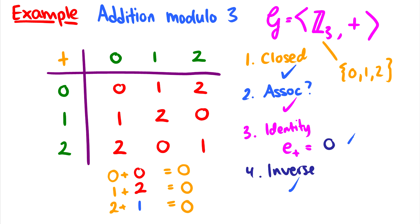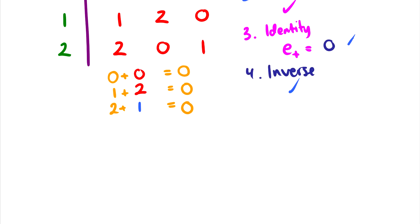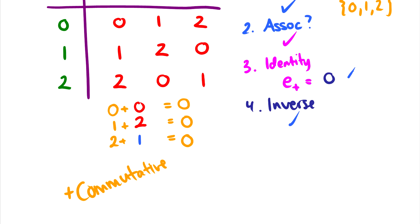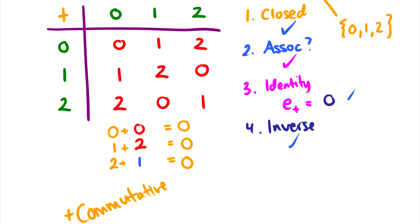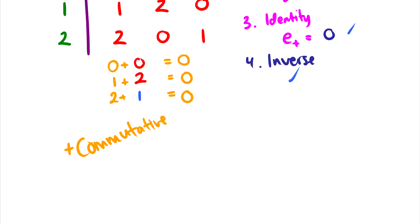That's all it takes to satisfy these, is these four axioms. In fact, this group is also commutative, which means that we can switch the order of things around. And we can tell that it's commutative based on kind of the symmetry here, but we can also check ourselves manually. And if it's commutative, then it is called an abelian group.